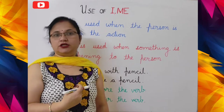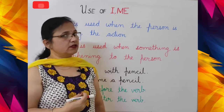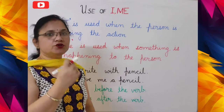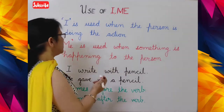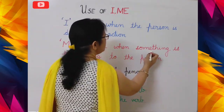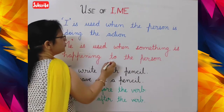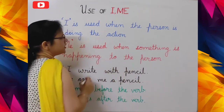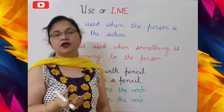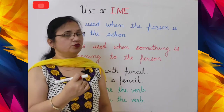I am acting — so when I am talking about the action I am doing, I use 'I'. Me is used when something is happening to the person, or when someone is doing something with that person.